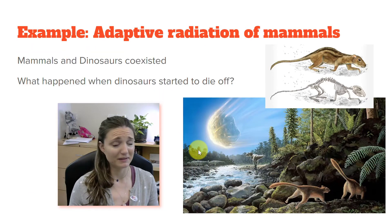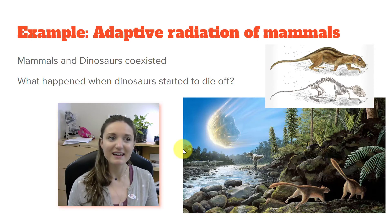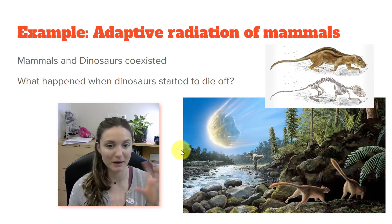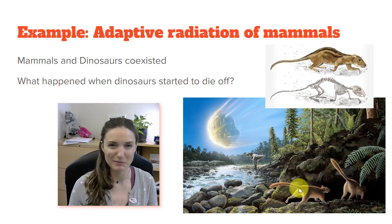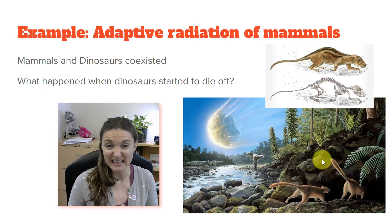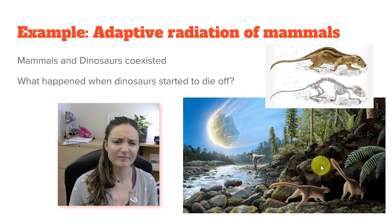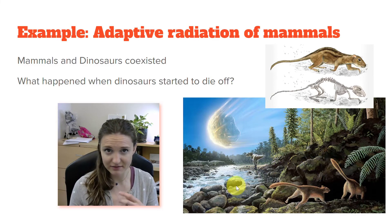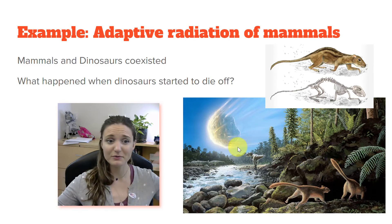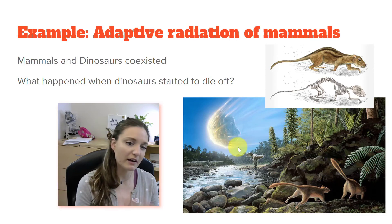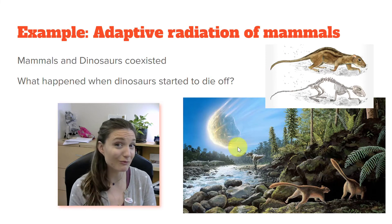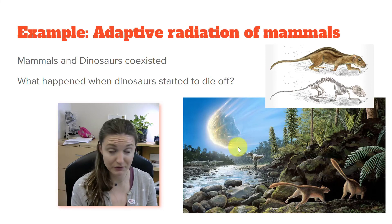Another example — and this has happened many times, but these are some key examples — is mammals and dinosaurs. Mammals co-existed with dinosaurs. We think they were mostly small, large rat-like things, probably nocturnal, eating insects or seeds. But once the dinosaurs started to die off — they were the dominant species filling most niches and using most resources — especially after that asteroid hit and we had massive climate change, that's really when we see mammals going through a massive adaptive radiation.